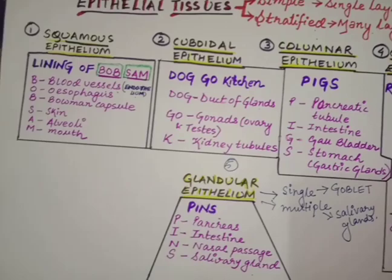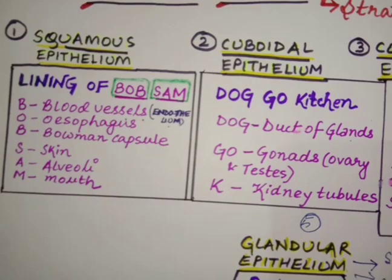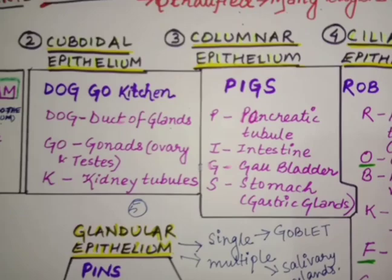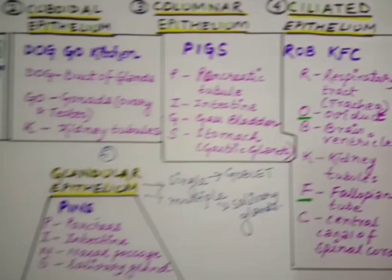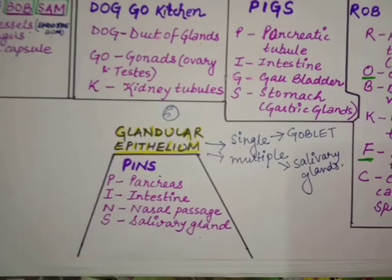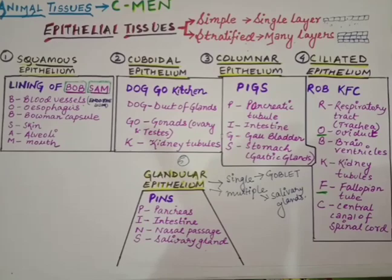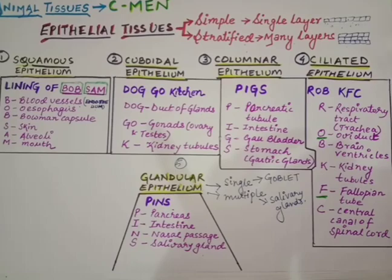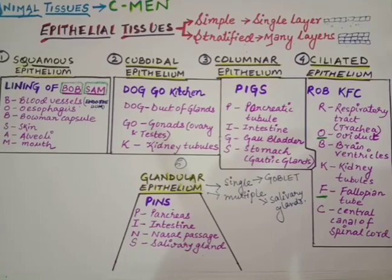To summarize the abbreviations: for squamous epithelium remember 'lining of BOB SAM,' for cuboidal epithelium 'DOG GO Kitchen,' for columnar epithelium 'PIGS,' for ciliated epithelium 'ROB KFC,' and for glandular epithelium 'PINS.' If you remember these short abbreviations, you should have no issue answering any question — whether MCQ or otherwise. Just remember these small abbreviations and make your learning fast.